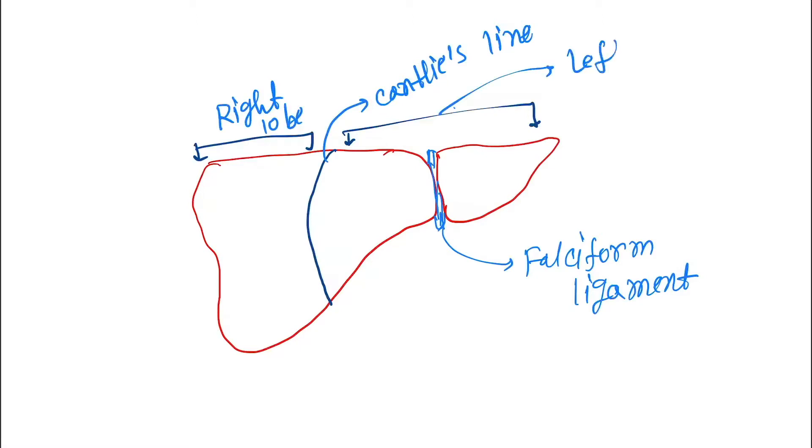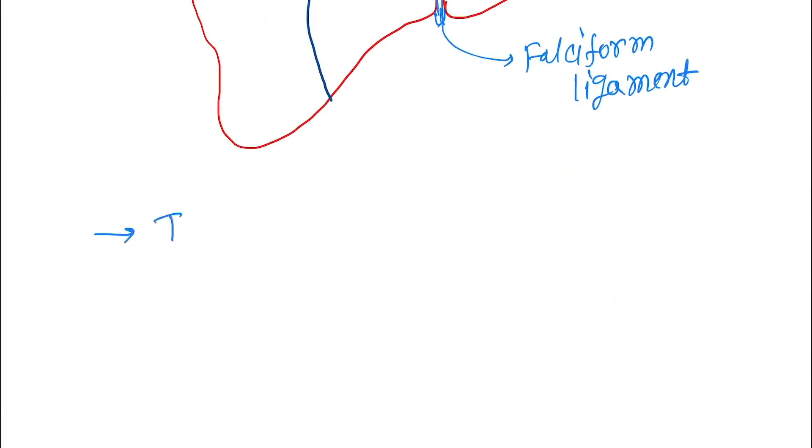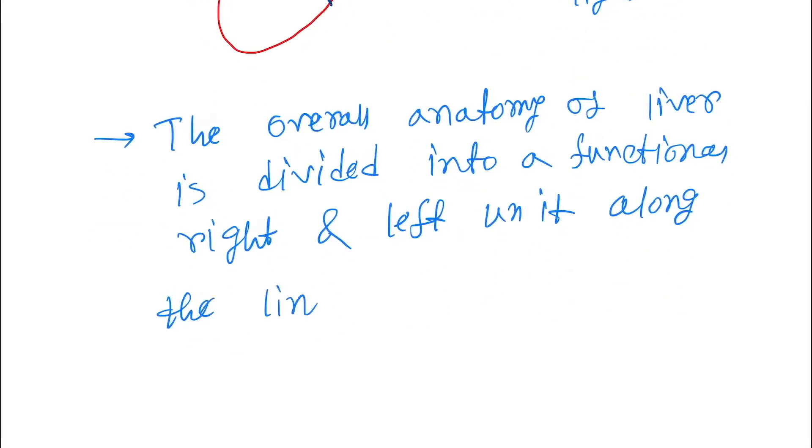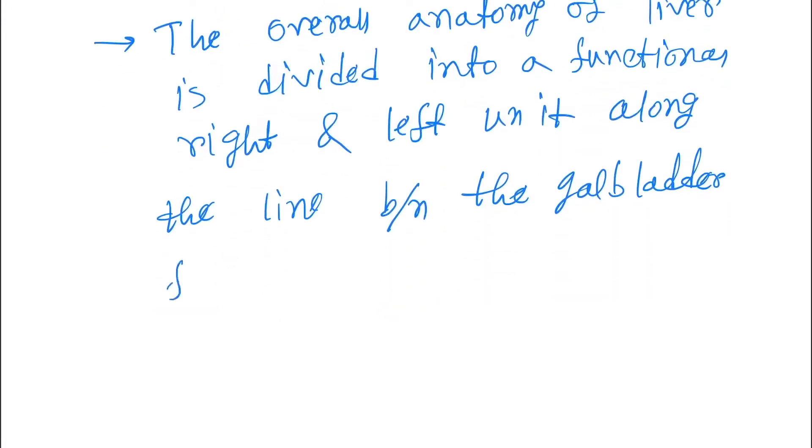And this is the left lobe of liver. Now let's write down. The overall anatomy of liver is divided into a functional right and left unit along the line between the gallbladder fossa and the middle hepatic vein.